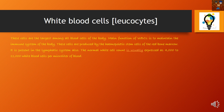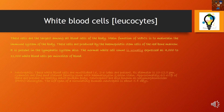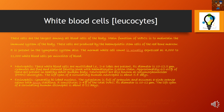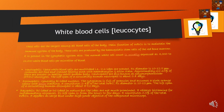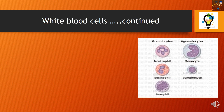White blood cells, or leukocytes, are the largest among all blood cells. The normal value is 4,000 to 11,000 per microliter of blood. There are three granulocytes: neutrophils, eosinophils, and basophils. Under the microscope, neutrophils show lobed nuclei, eosinophils stain red with eosin and contain two lobes, and basophils have a hazy nucleus with many granules.